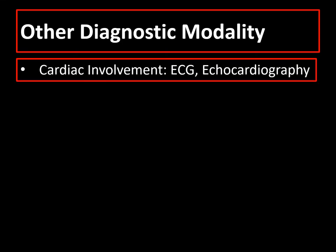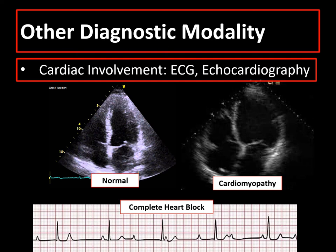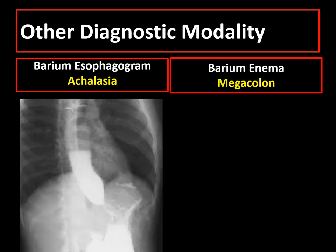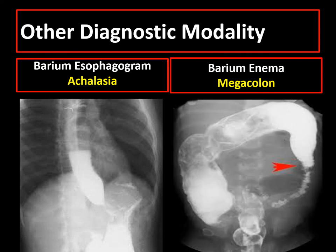Other ancillary tests are ECG and 2D-Echo to document heart block and cardiomyopathy with or without apical aneurysm, respectively. We can also do barium esophagogram to document achalasia or barium enema to check for megacolon.